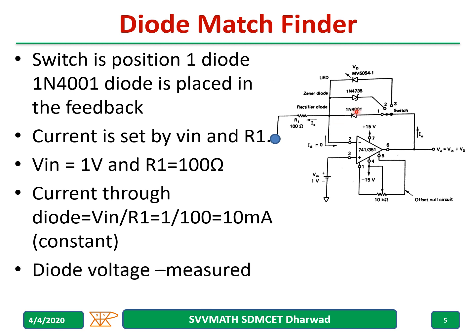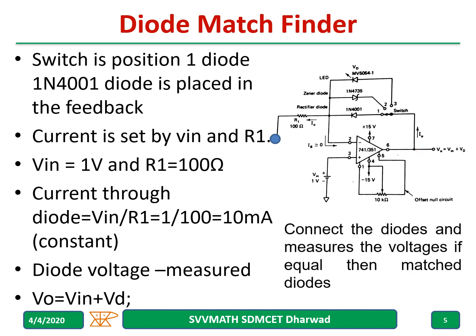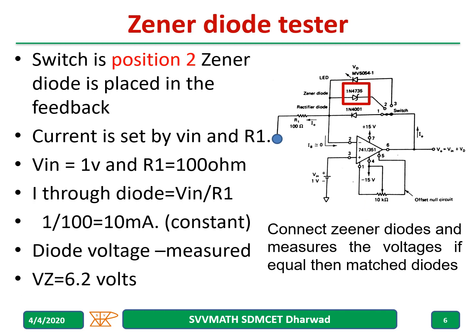The diode is connected in the feedback path and the voltage across the diode can be measured. The voltage you get at the output is Vin plus Vd — when you measure at that point you will get Vin plus Vd. Connect the diodes one after the other in the feedback path and measure the voltages. If the voltages are equal, then those diodes are matched.